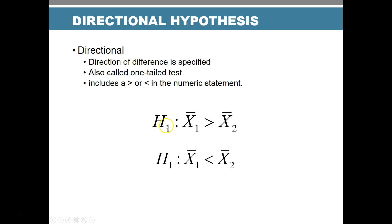A note about writing H with a 1: if you have multiple hypotheses, writing H-sub-1, H-sub-2, H-sub-3 helps keep track of them. If you just have one hypothesis, writing H-sub-a is fine. But when you have multiple hypotheses, you need to number them.